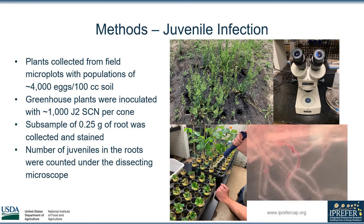For the juvenile infection portion of the project, we collected plants from two locations. The first was from field microplots in St. Paul, Minnesota, which we can see an example of to the right. The soil has a population of about 4,000 eggs per 100 cubic centimeters. The greenhouse plants were inoculated with about 1,000 J2 nematodes per cone. Subsamples of 0.25 grams of root were collected and stained, and then the number of juveniles in the roots were counted under the dissecting microscope. There is an example of what the nematodes in the roots look like at the bottom right of the slide.